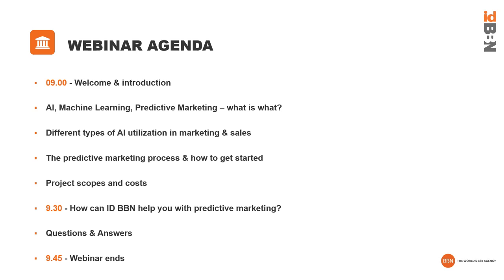Machine learning, artificial intelligence, predictive marketing — that is the gist of what we're going to be talking about today. We'll be going through the differences between them, the different types of utilization from a marketing and sales perspective in particular. Then we'll look at predictive marketing as a process and go through how one could get started if you're not on this journey yet. We'll also be looking at project scopes and costs on a top level.